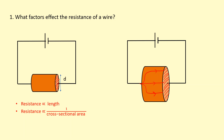Let's say the wire on the left has a diameter d and the wire on the right has a diameter of 2d. How does this affect the cross-sectional area? The one on the left has a cross-sectional area A, and the one on the right turns out to have four times the cross-sectional area — not double, but actually four times.